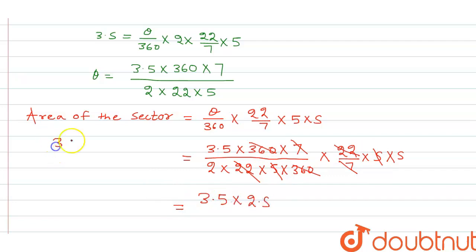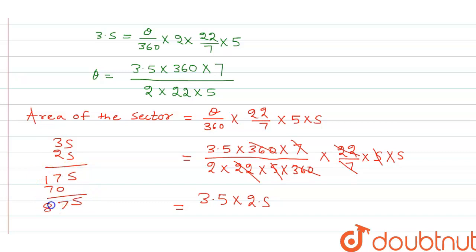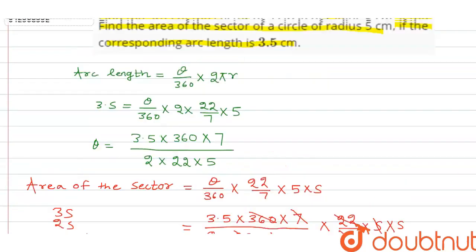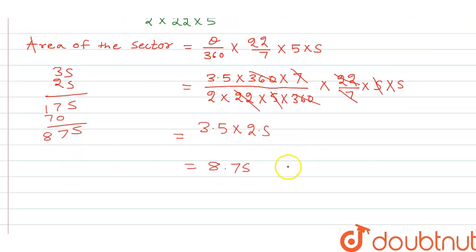Multiplying 3.5 into 2.5, we get 8.75. So the area of the sector is 8.75 square centimeters.